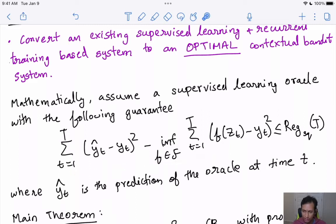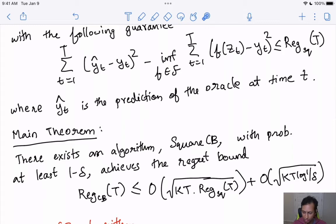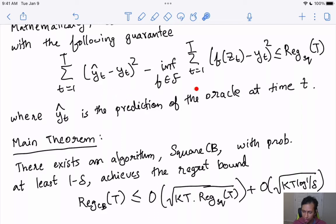If you assume such a regression oracle, then the main theorem states that the regret of this square CB algorithm with probability at least 1-δ achieves a regret of √(K·T) times the regret of this regression oracle. This term here is the dominating term, and if this regret of the supervised learning oracle is like a constant, then this thing is almost the best possible you can achieve in a contextual bandit system. If we know how to minimize the square loss of a powerful function class, then we can minimize the total regret of the contextual bandit system. This is a very strong theorem and it's optimal in the sense that if you can get a good supervised learning oracle, this will give you the best possible contextual bandit system.